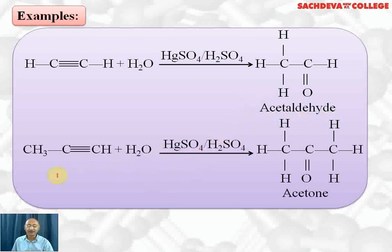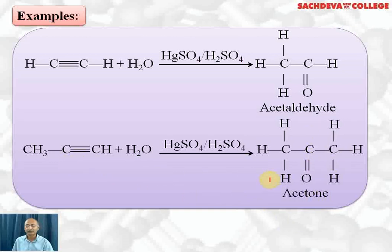A similar reaction takes place for an unsymmetrical alkyne, but it follows Markovnikov's rule. Adding water in the presence of HgSO₄ and H₂SO₄: OH attaches to the middle carbon and H to the terminal carbon. Adding another water molecule gives one more OH on the middle carbon and one more H on the terminal carbon. The two OH groups on the same carbon lose a water molecule, resulting in the formation of a ketone. Alternatively, the enol form obtained rearranges to give the keto form, as discussed earlier.